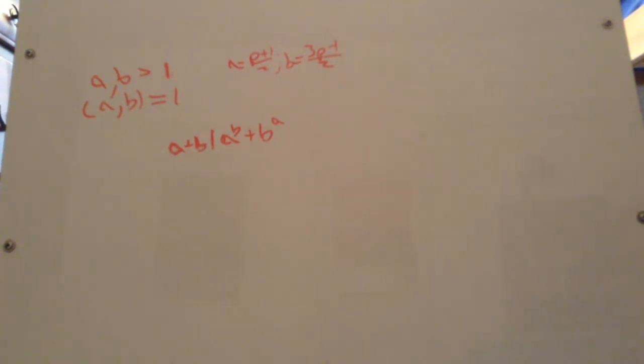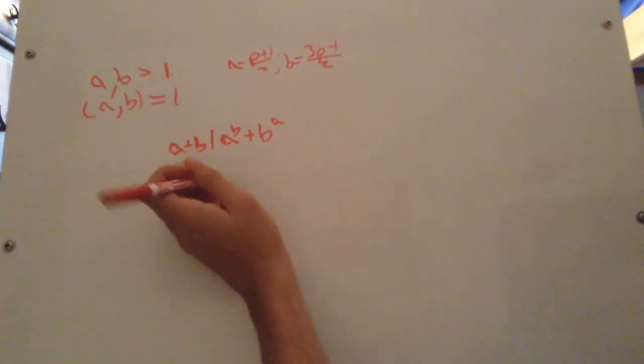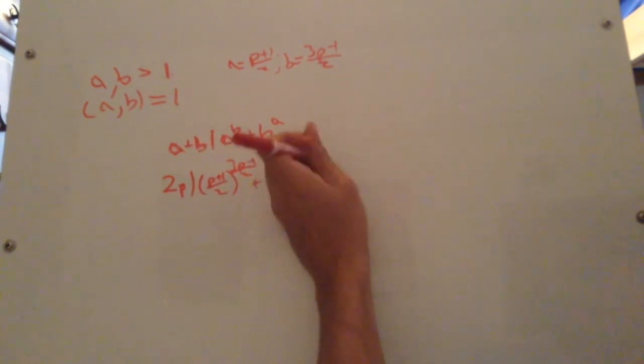So now we start writing numbers together. We already said a plus b is 2p. And we have p plus 1 over 2 to the 3p minus 1 plus 3p minus 1 over 2 to the p plus 1 over 2.